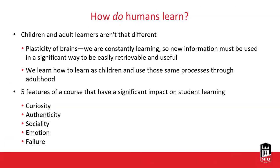We learn how to learn as children and use those same processes throughout adulthood. There are five features within a course that have a significant impact on student learning and can also serve us beyond formal education. Those five features are curiosity, authenticity, sociality, emotion, and failure. For those of us that have had jobs where we've learned things in addition to formal education, I think these concepts will really ring true, although maybe they don't seem as applicable to the classroom.